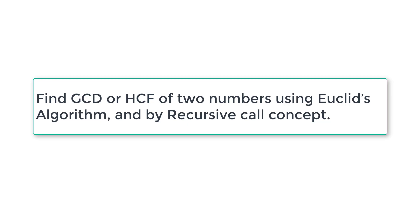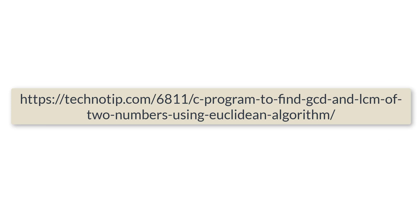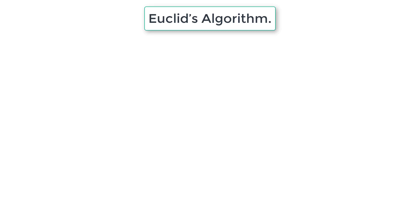Let's write a C program to find the greatest common divisor or highest common factor of two positive integer numbers input by the user using Euclid's algorithm and a recursive function. If you are new to GCD and Euclid's algorithm, please follow the link on your screen. We have shown the iterative way of finding GCD previously, so let's continue with the recursive function logic using Euclid's algorithm.